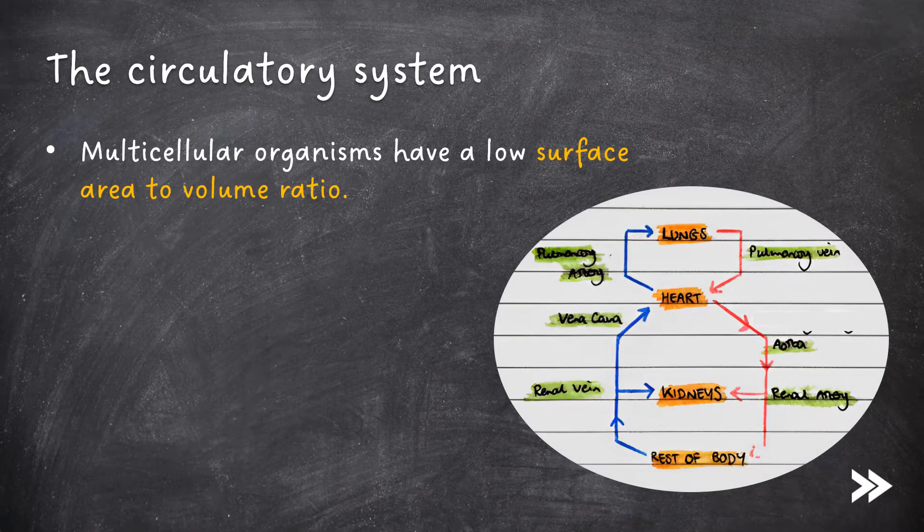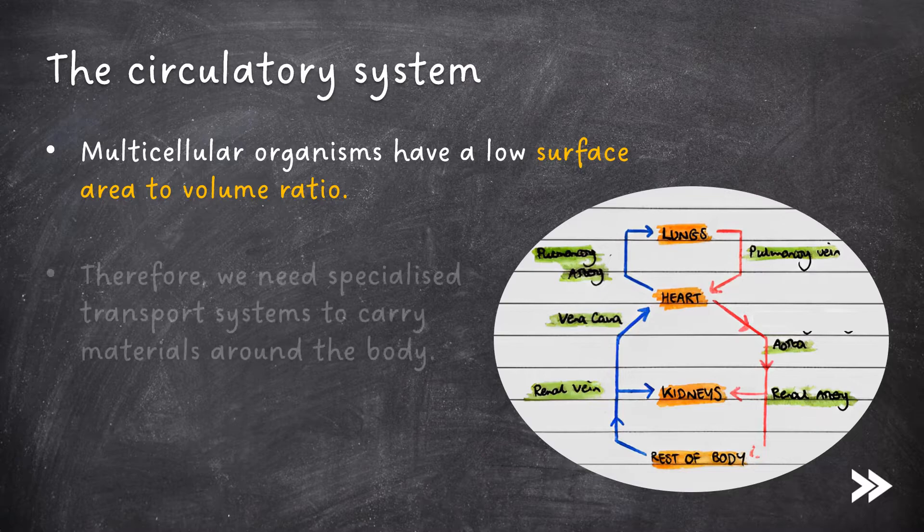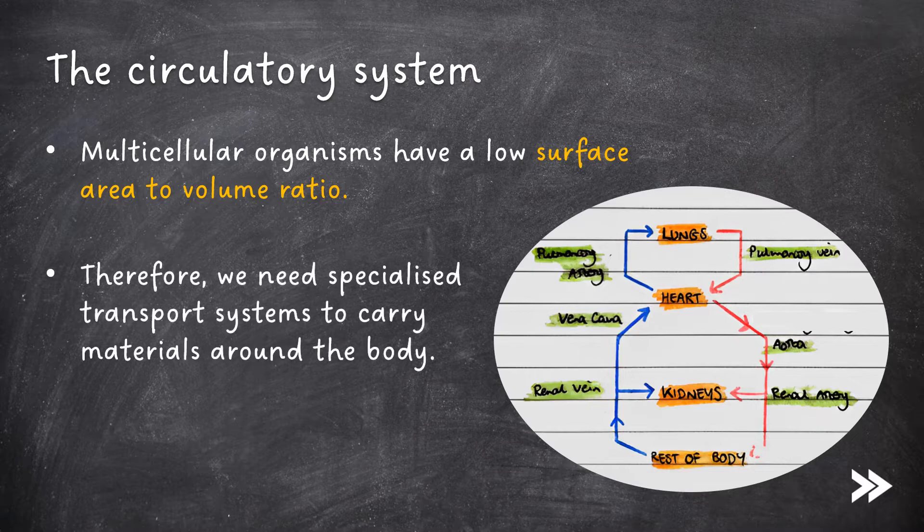Multicellular organisms have a low surface area to volume ratio. Therefore we need specialised transport systems to carry materials around the body.